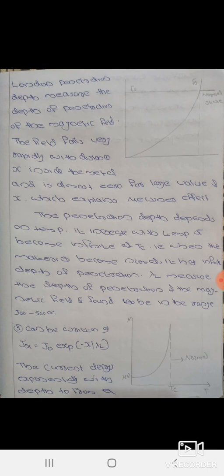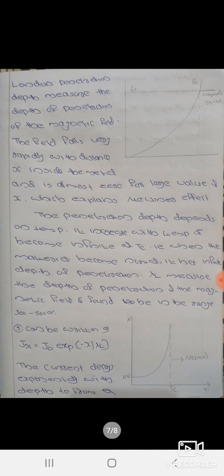Equation 5 can be written as jx = j₀·exp(−x/λ). The current decays exponentially with depth from the surface. This surface current exists and explains the Meissner effect — the current decays exponentially from the surface.